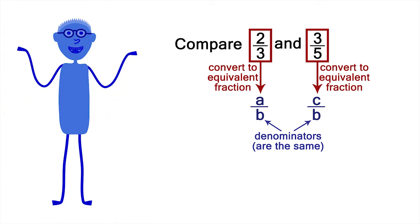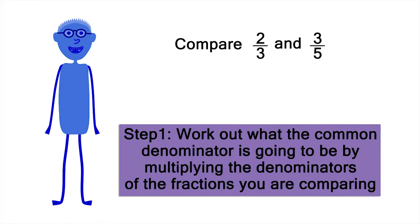I'll show you one way to do this. First, I'll work out what the common denominator is going to be by multiplying the denominators of the fractions we're comparing. Three times five is fifteen.